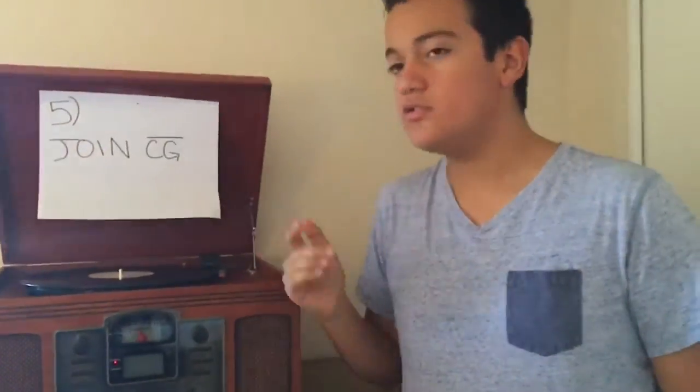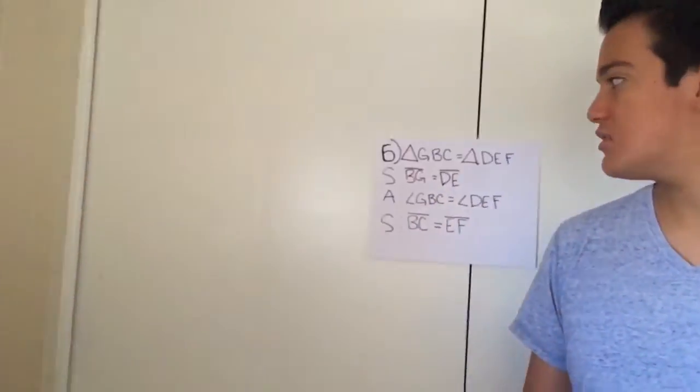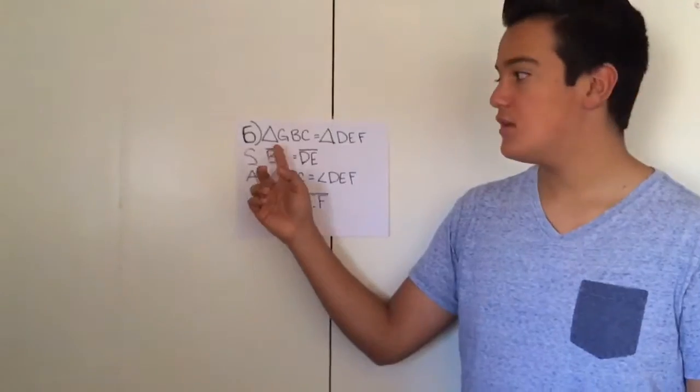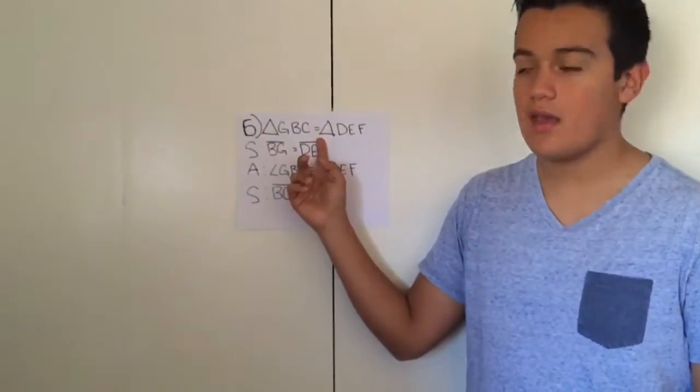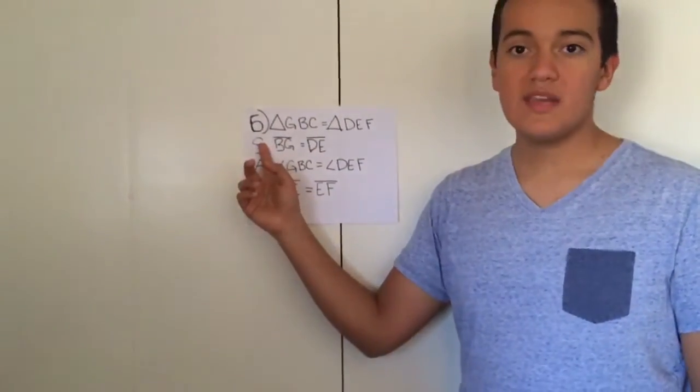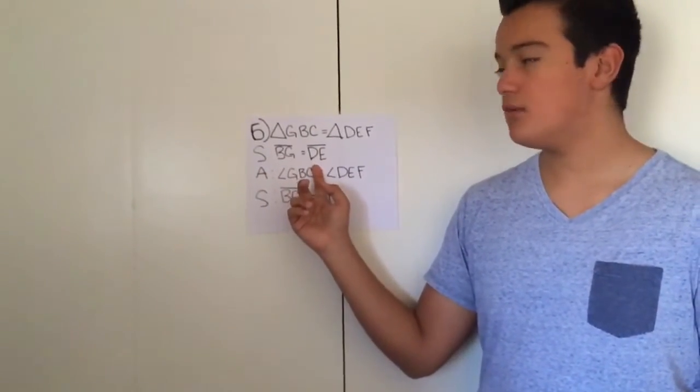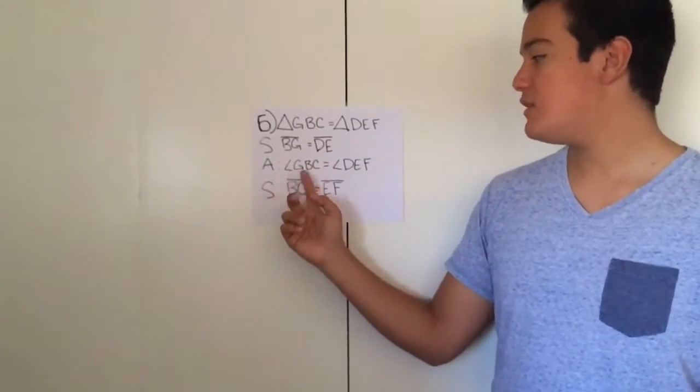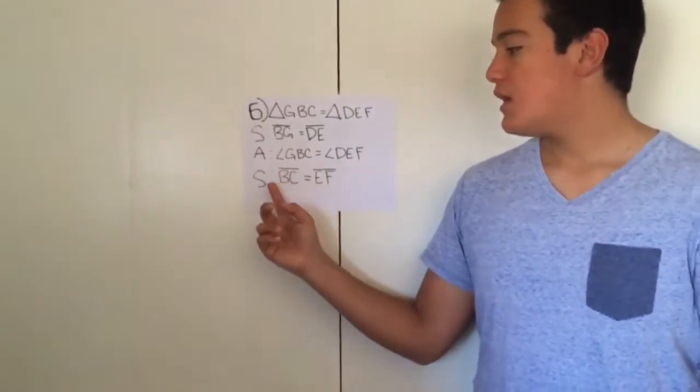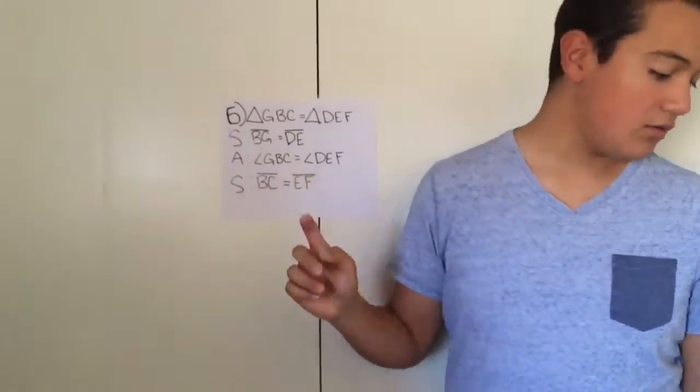Step five is pretty much just join CG. Once you join CG, you have to make sure that triangle GCB is equal to triangle DEF. So then we get a side angle side. So the sides BG and DE are equal, the angles GCB and DEF are equal, and the side BC and EF are equal.